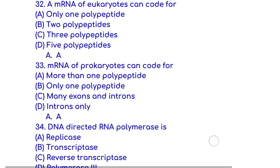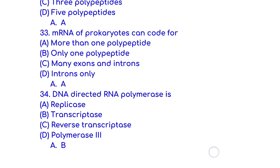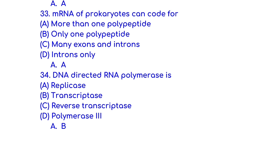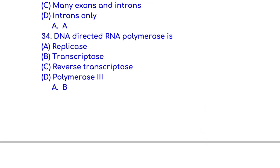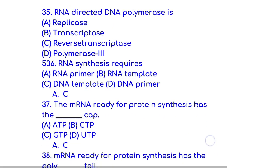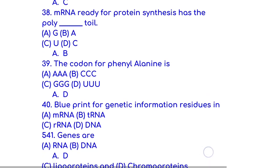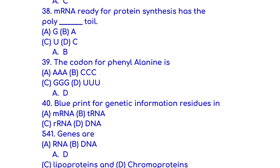mRNA of eukaryotes can code for only one polypeptide. mRNA of prokaryotes can code for more than one polypeptide. DNA-directed RNA polymerase is transcriptase. RNA-directed DNA polymerase is reverse transcriptase. The mRNA ready for protein synthesis has GTP cap. mRNA ready for protein synthesis has the polyadenine trail.